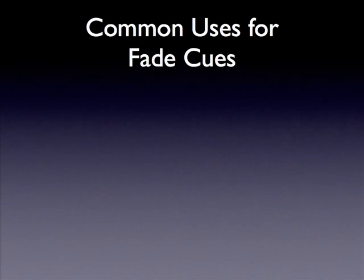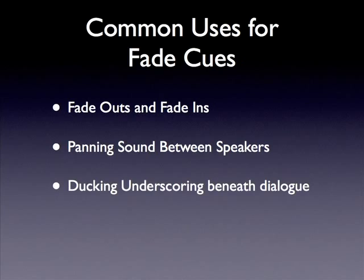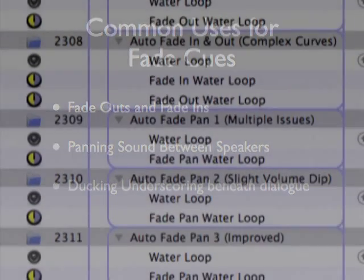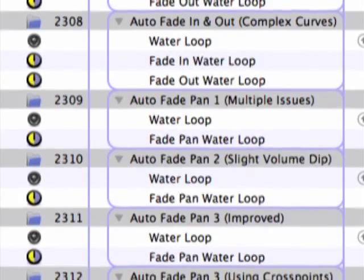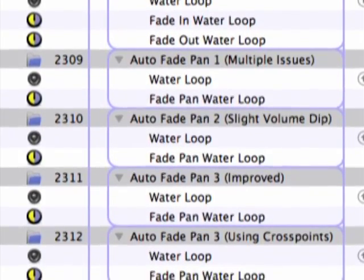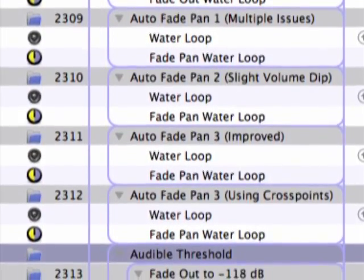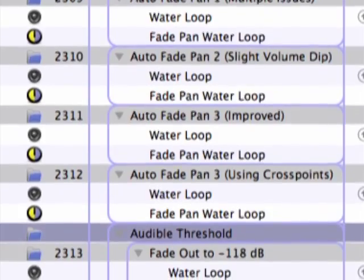A few common uses for the fade cue are fade outs and fade ins, panning sound between speakers, and ducking the volume of underscoring beneath live dialogue. There are a number of other uses, but we'll be focusing on these applications in this tutorial to help you understand the basics.